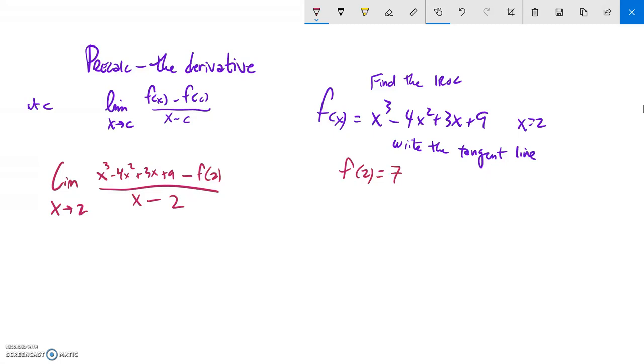All right, so if f(2) is 7, that means what I have is the limit as x approaches 2 of x cubed minus 4x squared plus 3x plus 9 minus 7 over x minus 2. And this 9 minus 7, I can actually do 9 minus 7 is 2.